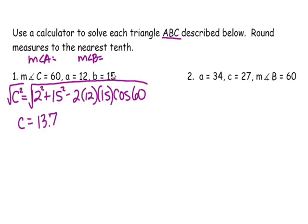So I'm going to begin by finding the measure of angle B because it's going to be my biggest angle. And I always want to begin with the biggest angle. So I'm going to say that the sine of 60 over 13.7 is equal to the sine of B over 15.